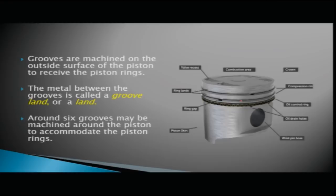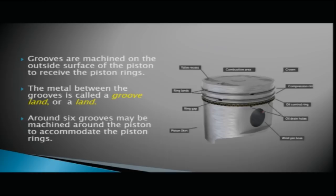In general, around six grooves may be machined around the piston to accommodate the piston rings, though the number may vary. The piston has valve recesses at the top (the crown), compression ring grooves, oil control ring grooves with oil drain holes, the pin boss area for the piston pin, and the piston skirt. The area between the ring grooves is called the ring land.